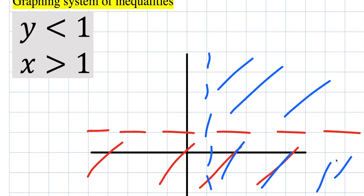Our last step is to see what area is common — what region is being shared. Here nothing is touching, here only blue is touching, here only red is touching, but in this region we have both red and blue. So all of this region would be our answer for the second problem.